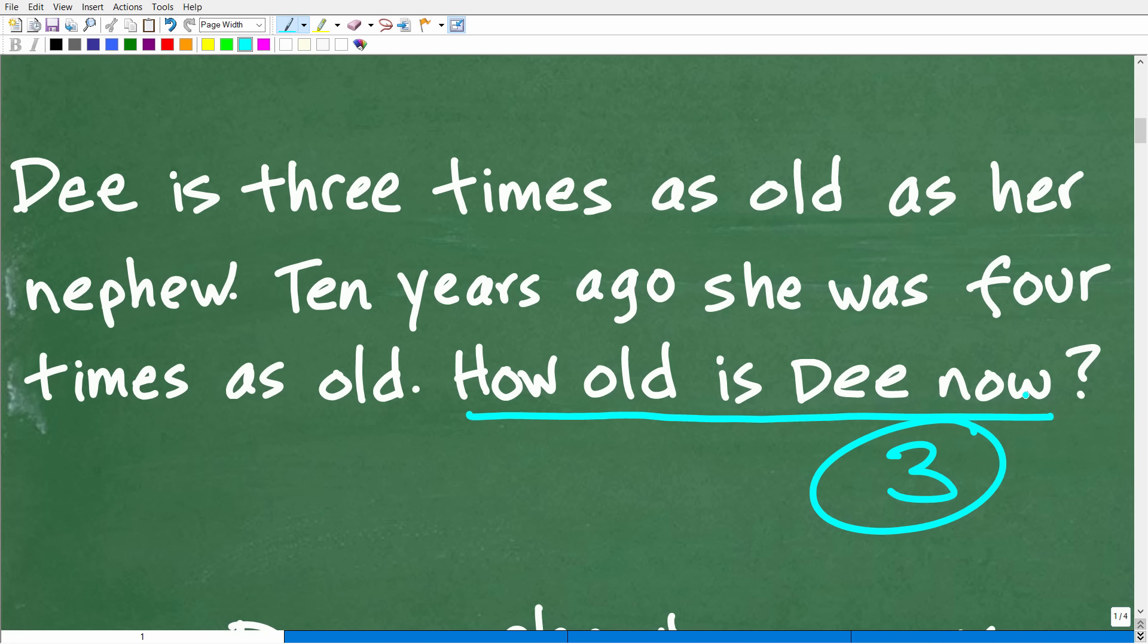So we're looking for Dee's age right now. Okay, of course, we're talking about Dee and her nephew. And we're talking about now, and we're also talking about ten years ago. So we need an approach. We need a strategy to solve this problem. So we need to kind of model this problem with some information or some sort of a visual way. And it's kind of hard to do this from a visual standpoint. But what we can do is use a variable.